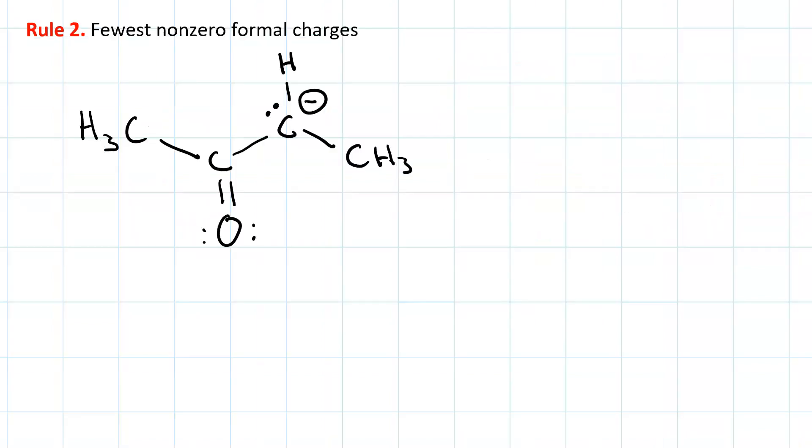Rule number two says we want to have the fewest non-zero formal charges. So, if we inspect this molecule, we have an allylic lone pair, and we also have a pi bond with different electronegativity.